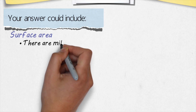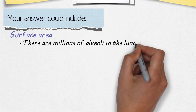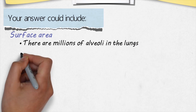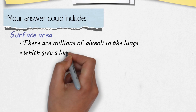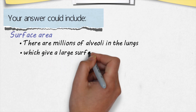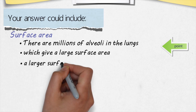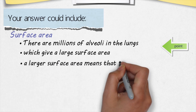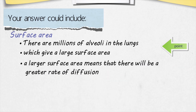Starting with surface area: there are millions of alveoli in the lungs, and by having millions of alveoli, that gives a large surface area for the exchange of gases. That is the key point. Behind every point we make, we need to include an explanation. So: by having millions of alveoli, which give a large surface area, this means that there will be a greater rate of diffusion of gases.